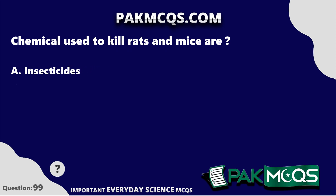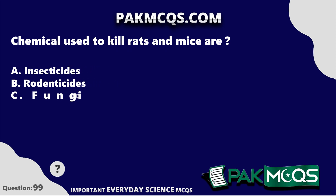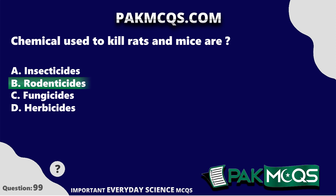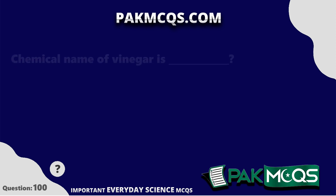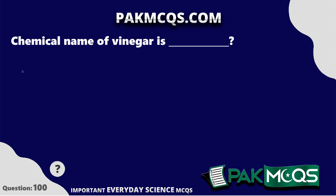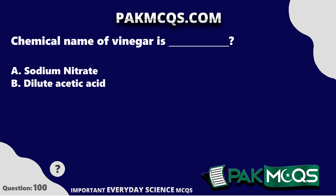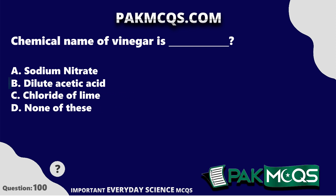Chemicals used to kill rats and mice are Rodenticides. The chemical name of vinegar is Dilute Acetic Acid.